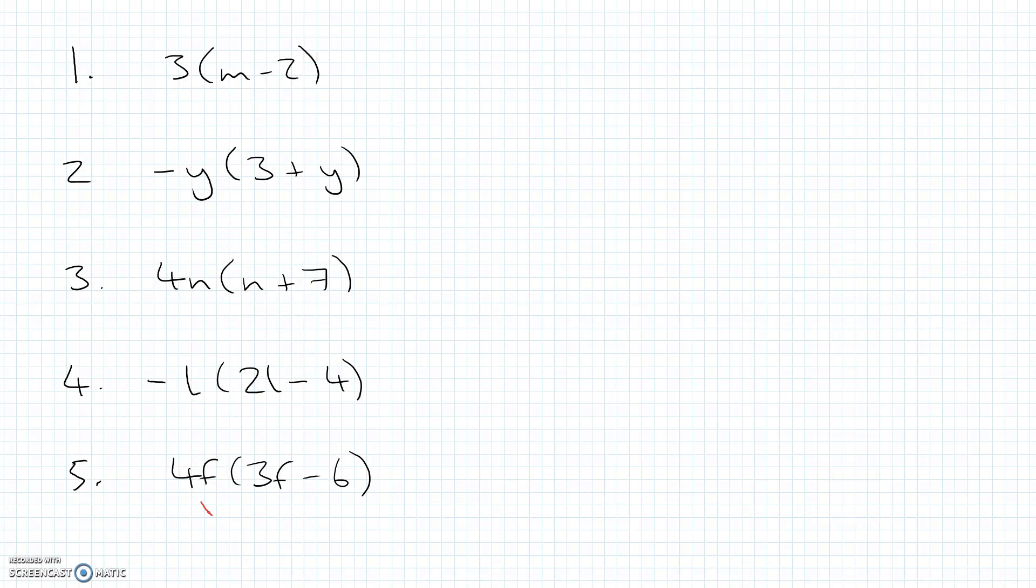I'm just going to get you started on this one. On the first term here, we've got to do positive 4f multiplied by positive 3f. And in these cases, we can deal with the numbers and the letters separately. So I can treat this as 3 times 4, that's 12. But I've also got f times f. So that's going to give me 12f squared. So that first term will be 12f squared. Let's see if you can finish off that one and have a go at the end of the video. Have fun.